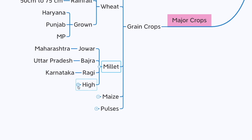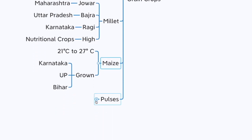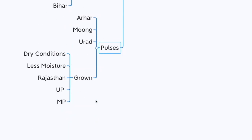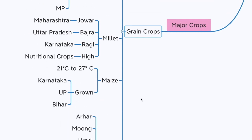Maize is grown in Karnataka, Uttar Pradesh, and Bihar, and requires a temperature of about 25 to 27 degrees centigrade. Finally, we have pulses — arhar, moong, and urad — which are grown in dry conditions with less moisture. They are extensively grown in states such as Rajasthan, Uttar Pradesh, and Madhya Pradesh.